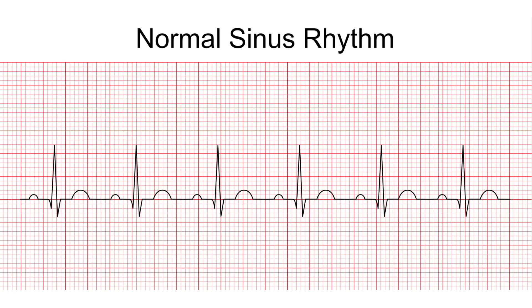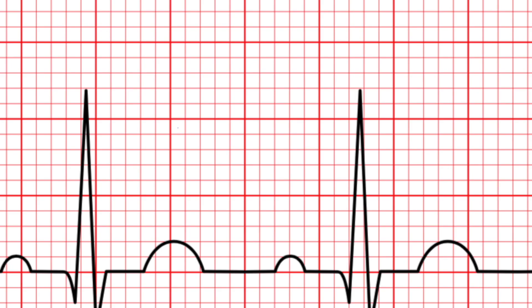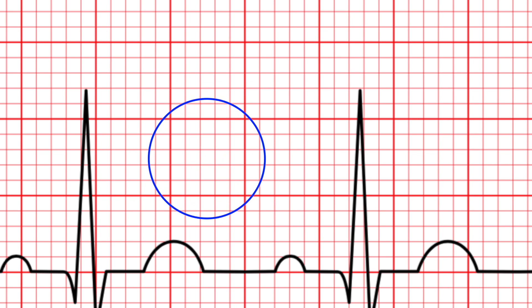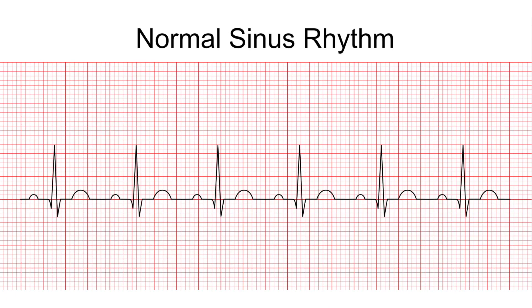With a quick review of a six-second strip as shown here: each small square equals 0.04 seconds, and five of those small boxes make up one large box, which equals 0.20 seconds. A six-second strip is made up of 30 large boxes when you're analyzing it.